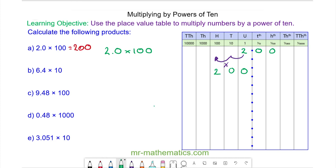For question b, we have 6 units and 4 tenths, and because we have 1 zero in 10, we're moving it to the left by one place. So the 6 moves into the tens column and the 4 tenths moves into the units column. So 6.4 times 10 is 64.